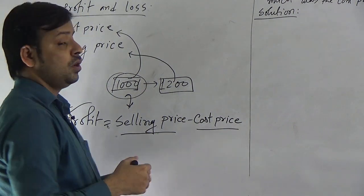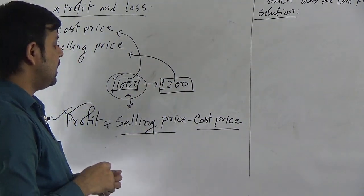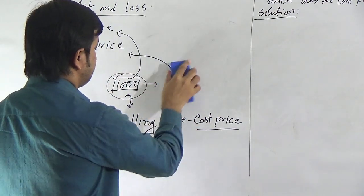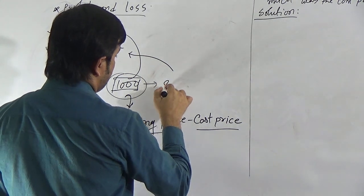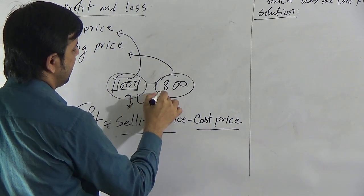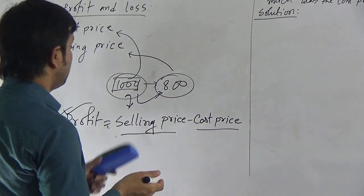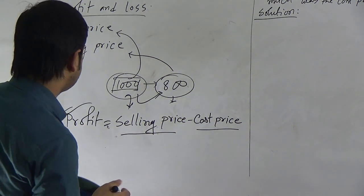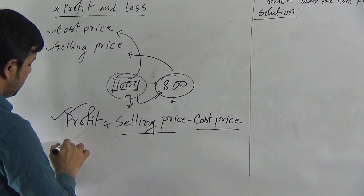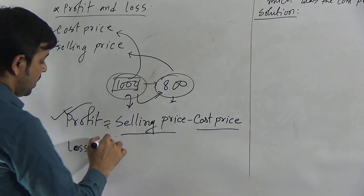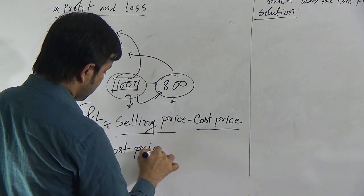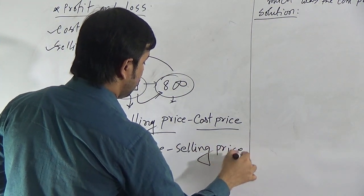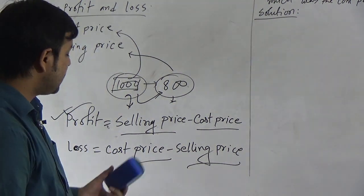And again, what is loss? Loss means if the selling price is less than the cost price. Suppose the person sold the item at 800 taka — then 800 is less than 1000. It means the selling price is smaller than the cost price. In this case, we will get a loss. And the formula to determine the loss is: cost price minus selling price. If we subtract the selling price from the cost price, we will get the total amount of loss.